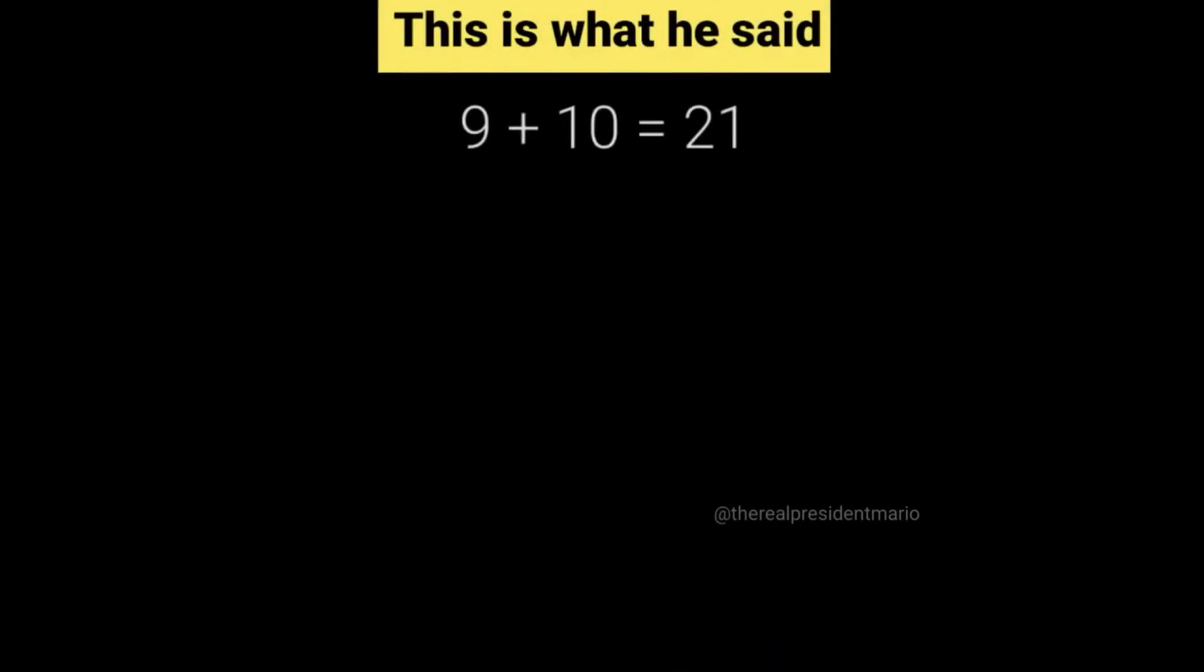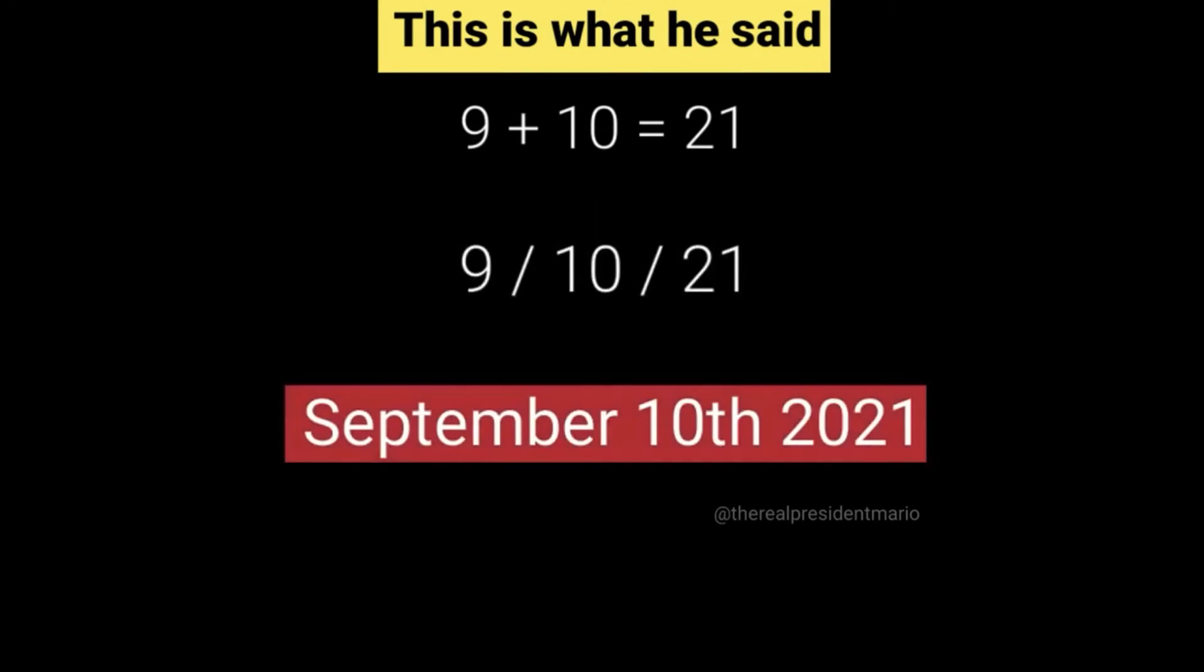Now here's something else incredible about this genius kid. 9 plus 10 wasn't only a revolutionary mathematical statement, it was also a message. If you rearrange the numbers, you get September 10th, 2021. And most people think that that was just a meme, nothing really happened on that day.